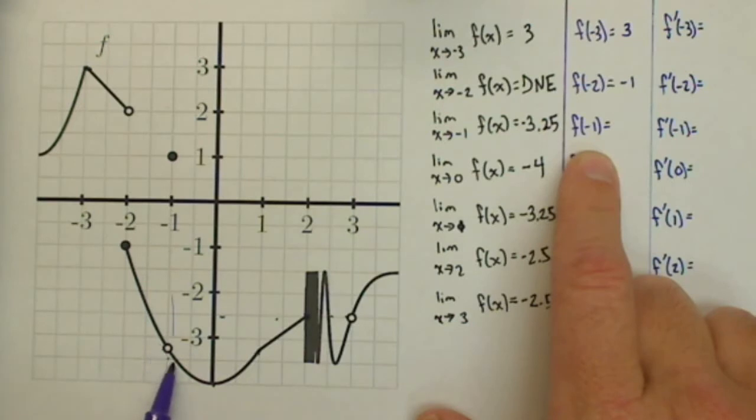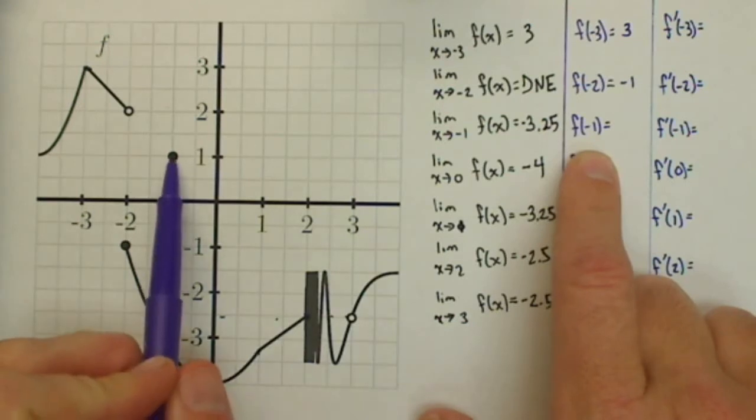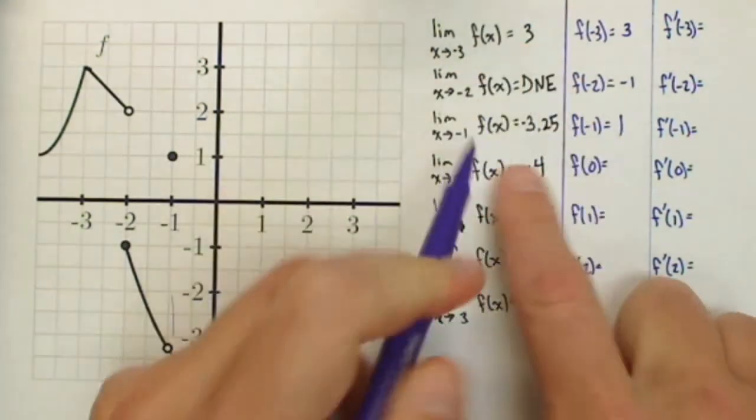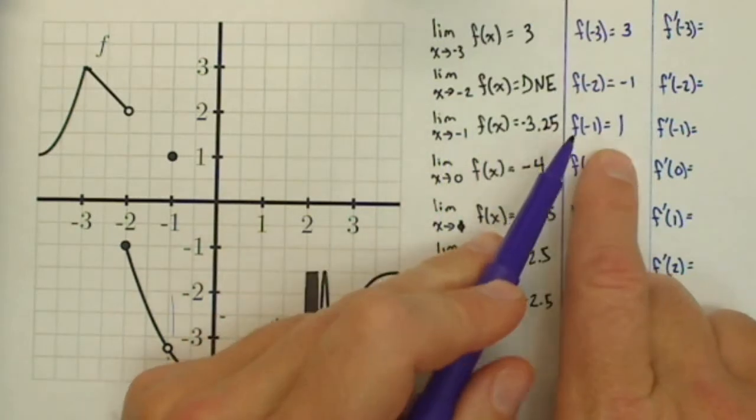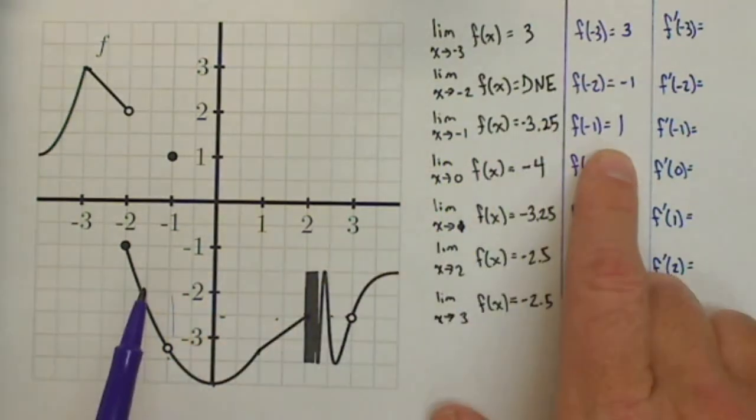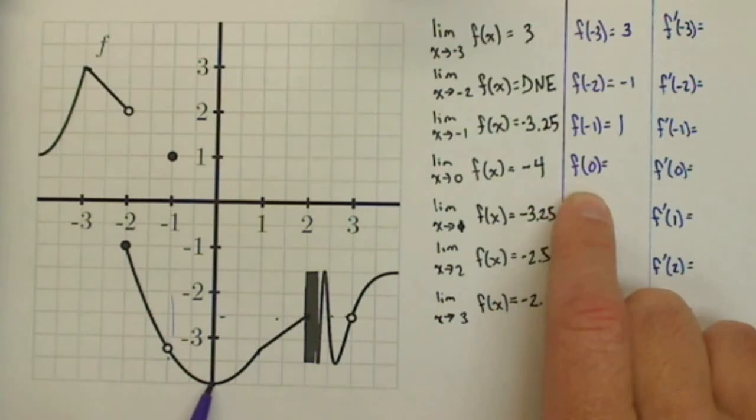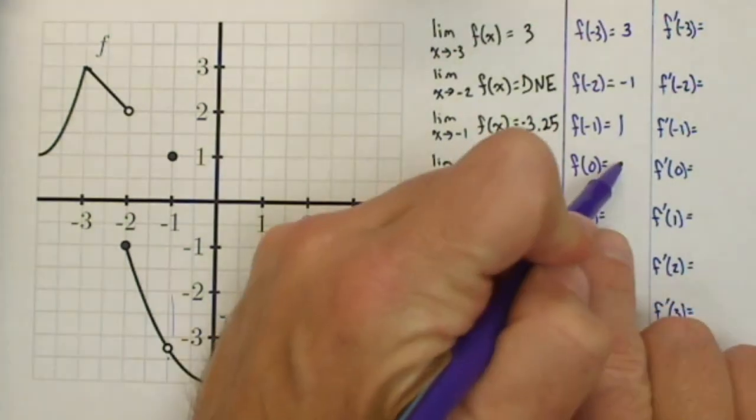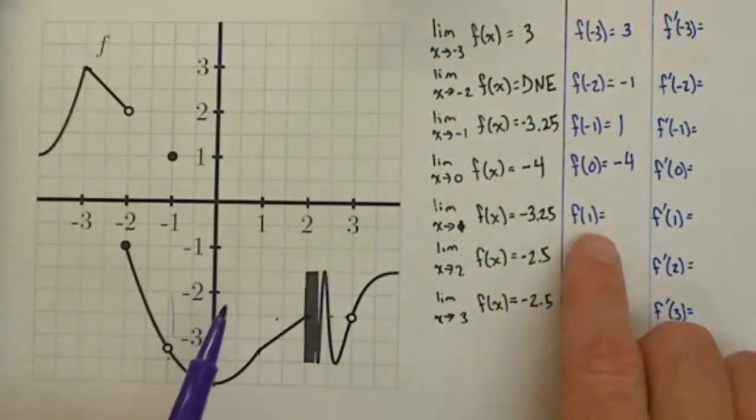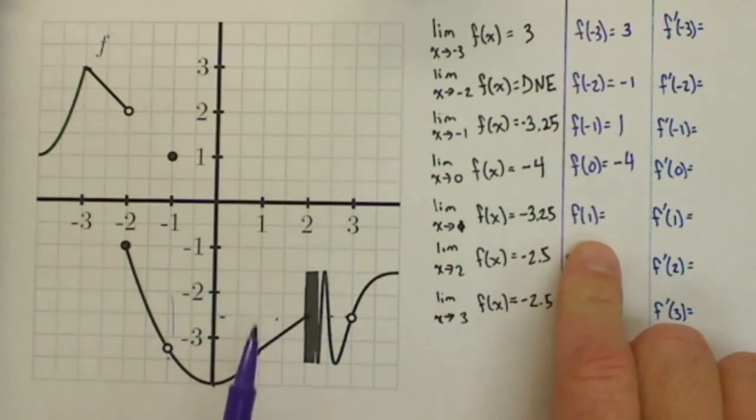f of negative 1, now the limit was negative 3.25, but the function value's up here at 1. So notice, just because the limit exists doesn't mean it has to be the same as the function value. f of 0 is down here at negative 4, okay, so it is the same as the limit, and we're going to look at the meaning of that in this section.